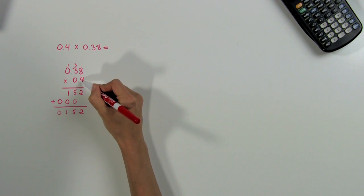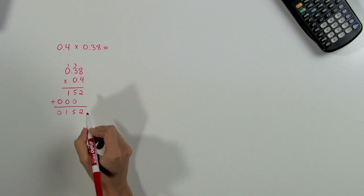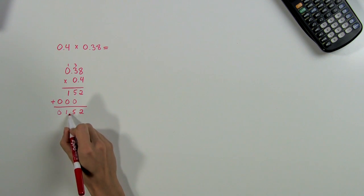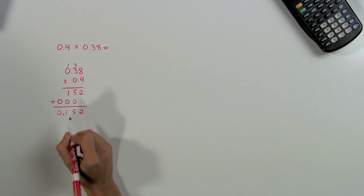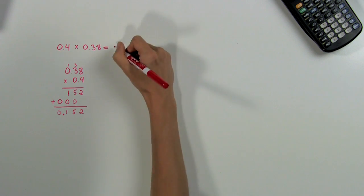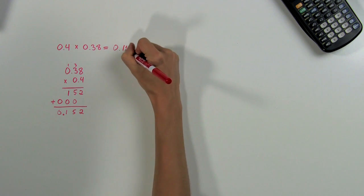So in our answer, we count three places from the right: 1, 2, and 3, and put our decimal point right there. So our final answer is 0.152. Now let's do another problem where we multiply twelve hundredths times twenty-three hundredths.